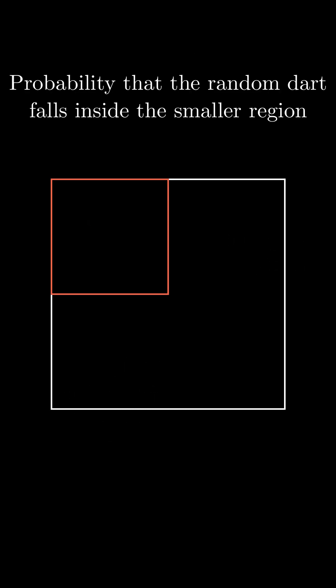There are two ways to answer this. Firstly, since the small square is one-fourth the area of the big square, we can see plainly that this probability should also be one over four. In other words, any random dart that you throw has a one over four chance of falling within the small square.